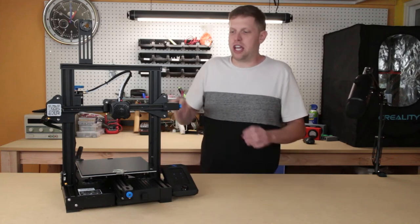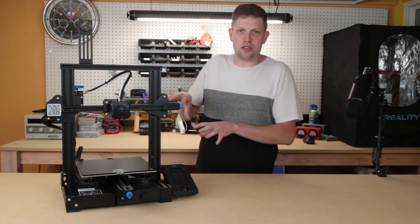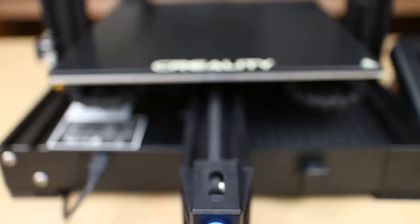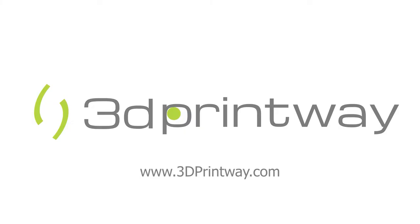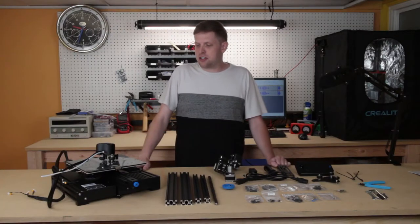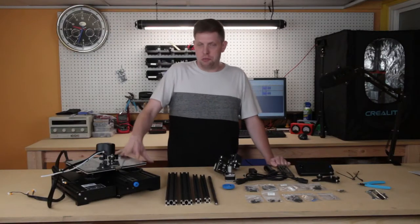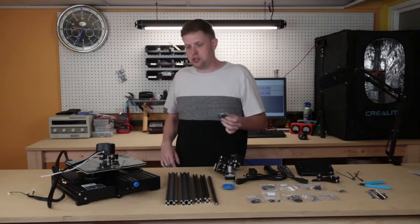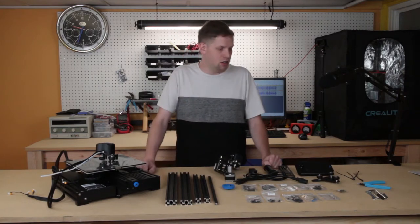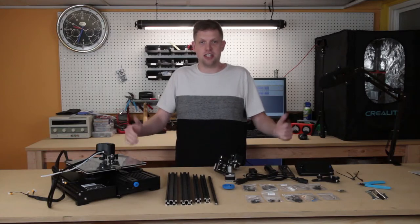Hi, this is Clayton from 3D Printway. Today we are going to build the Ender-3 version 2. Alright, so we have everything unboxed. First thing we're going to do is start with the base and putting our Z-axis extrusions on. We have our Z-limit switch. We'll need to put that on with that as well. So let's get started. I'm excited to try this thing out.